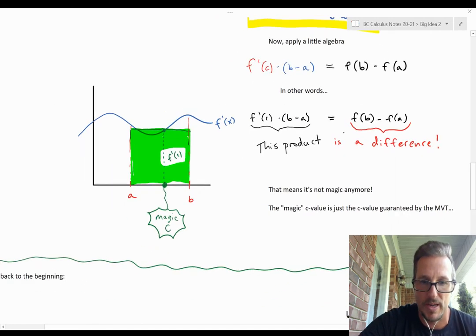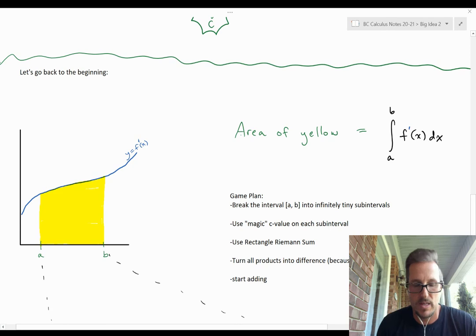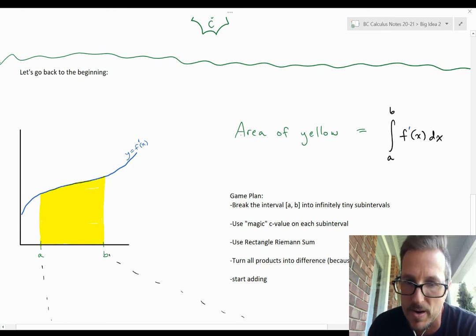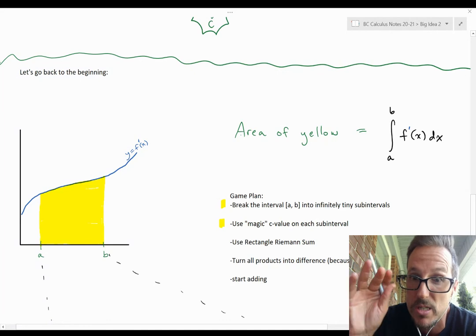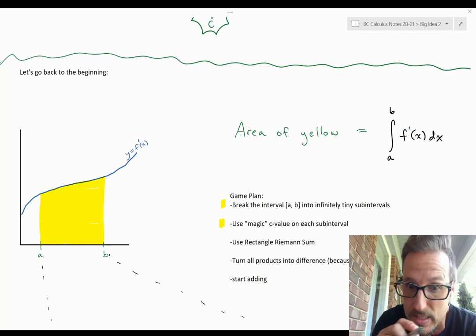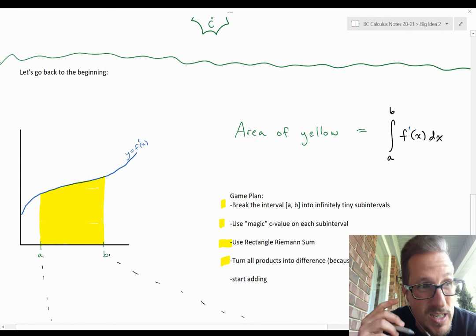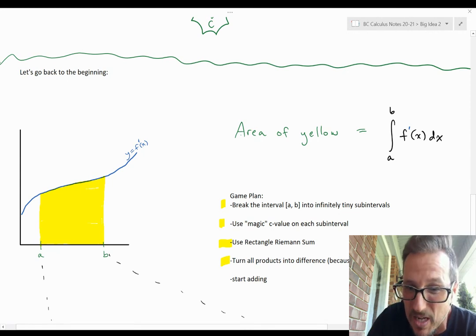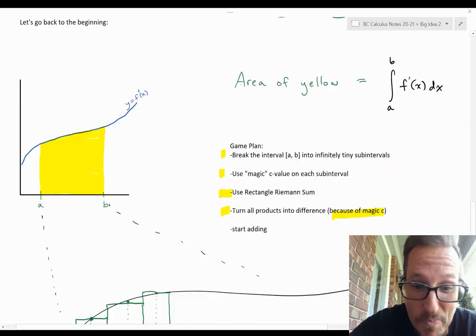Now let's go back to the beginning. We are trying to calculate the exact value of this definite integral — the yellow area, the integral from a to b of f prime. Here's the game plan: I'm going to break the interval into infinitely tiny sub-intervals. On each sub-interval I'll use this magical c value that gives me the exact area under the curve — the area of the rectangle. Then I'll use the Riemann sum, add all that together, and then use that idea of turning a product into a difference.